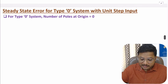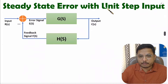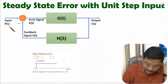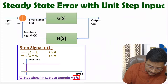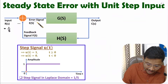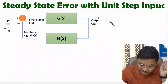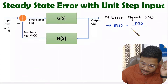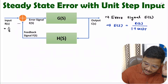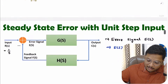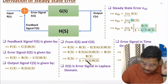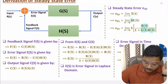Let us identify steady state error with unit step input. You can observe here we have a negative feedback system, where input is R(s). That is unit step input, means R(s) is 1 divided by s. And steady state error is based on error signal. Error signal is E(s), that is R(s) divided by 1 plus G(s)H(s). That I have derived in my last video for negative feedback system.